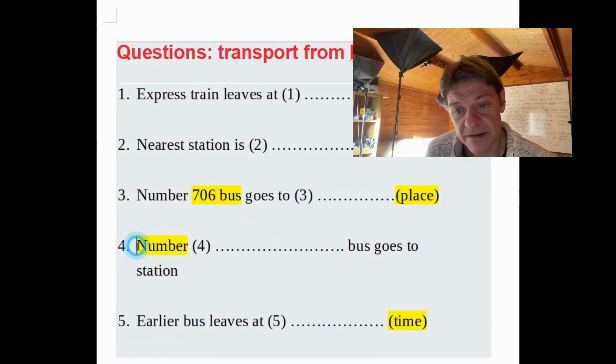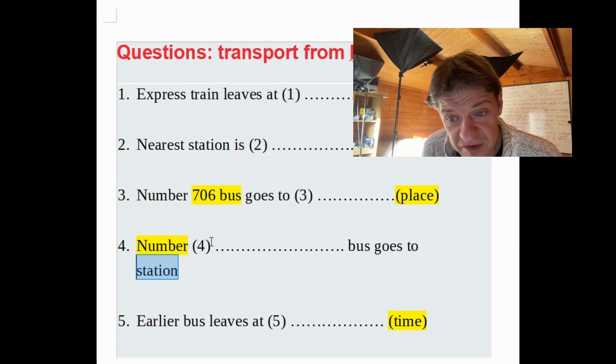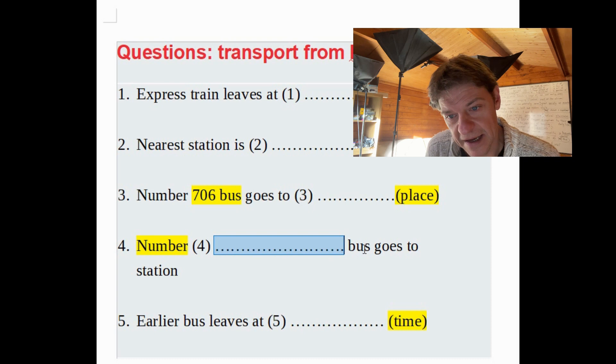Number four, the number bus goes to station. They often miss out the articles in these in the IELTS. I don't know why. But we're listening out for a number, the number of a bus, and it's the bus that goes to the station.